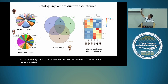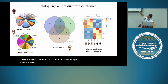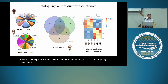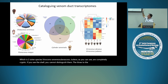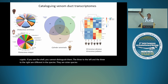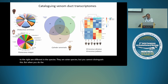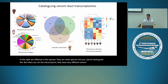We also have a case on the right — two sister species, Biroconus cebreus and Biroconus judeus, that are completely cryptic. Looking at the shell, you cannot distinguish them, yet when you do the transcriptomes, they have very different venom composition in the cocktail.